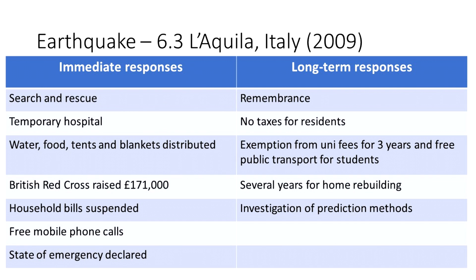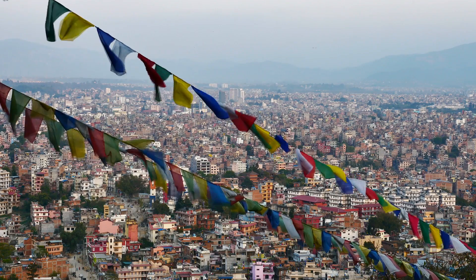There was also lots of help and aid from the government. Long-term responses in Italy included no tax for residents — to help the local economy — rebuilding of historical buildings, and investigation into the causes of the earthquake.